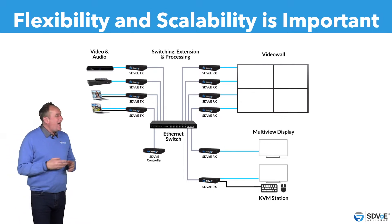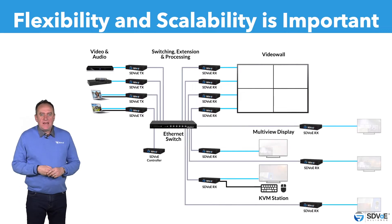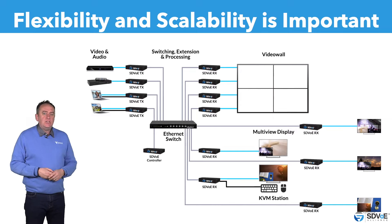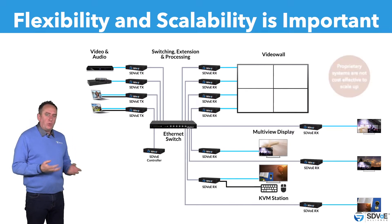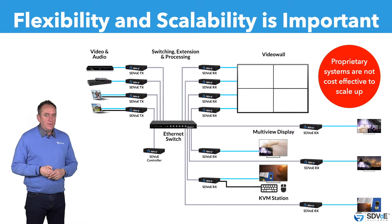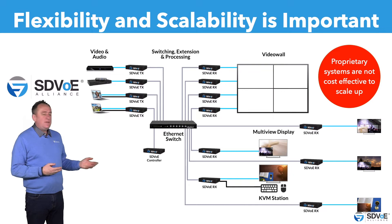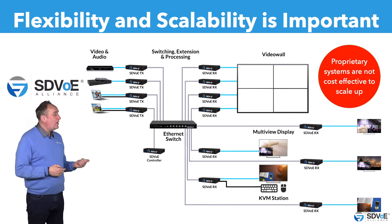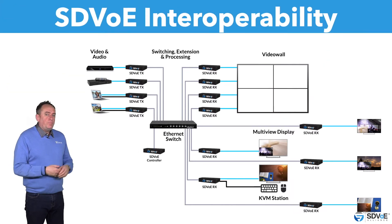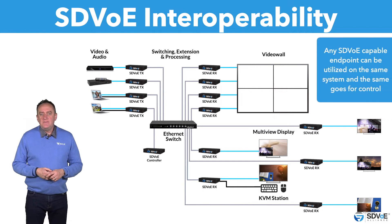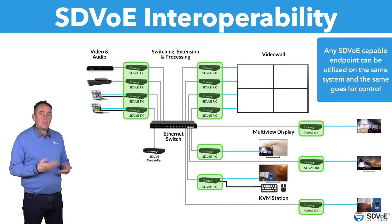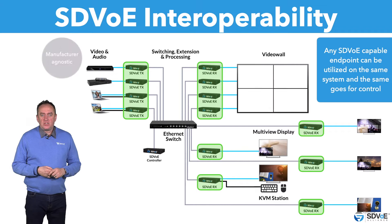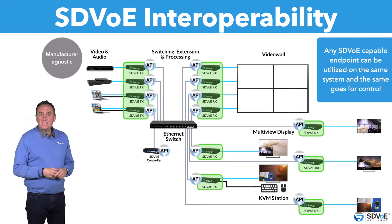Flexibility and scalability of any system is vital. If extra screens need to be added to allow larger audiences to be immersed in the experience, this needs to be achieved in the most cost-effective way possible. Proprietary systems are not cost-effective to scale up, and if multi-view is required, there really is only one option — SDVoE. Adding another display, whether it's a 50-inch monitor in a small room or a projector in a large arena, the only requirement is an extra node on the network itself. The interoperability of SDVoE means that any SDVoE-capable endpoint can be utilized on the same system. SDVoE is manufacturer-agnostic — the API is the driving force behind the system, and these API commands are the same regardless of the manufacturer's equipment used.